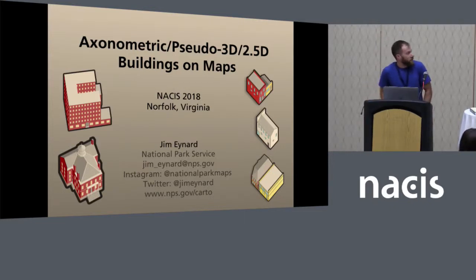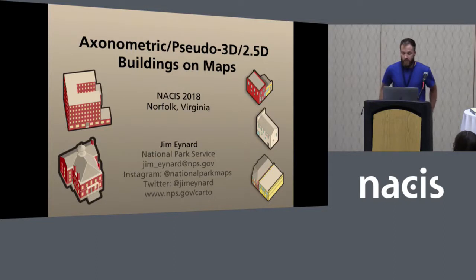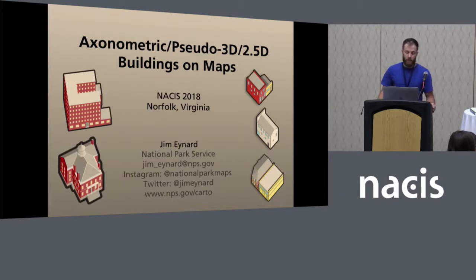So I work for the National Park Service. There are a lot of different Park Service units — there's 417 units and then there's additional Park Service entities beyond that. There are a lot of different types of places; they're not just all national parks. There's national historic sites, national rivers, national battlefields, many different things. So many different types of maps we create.